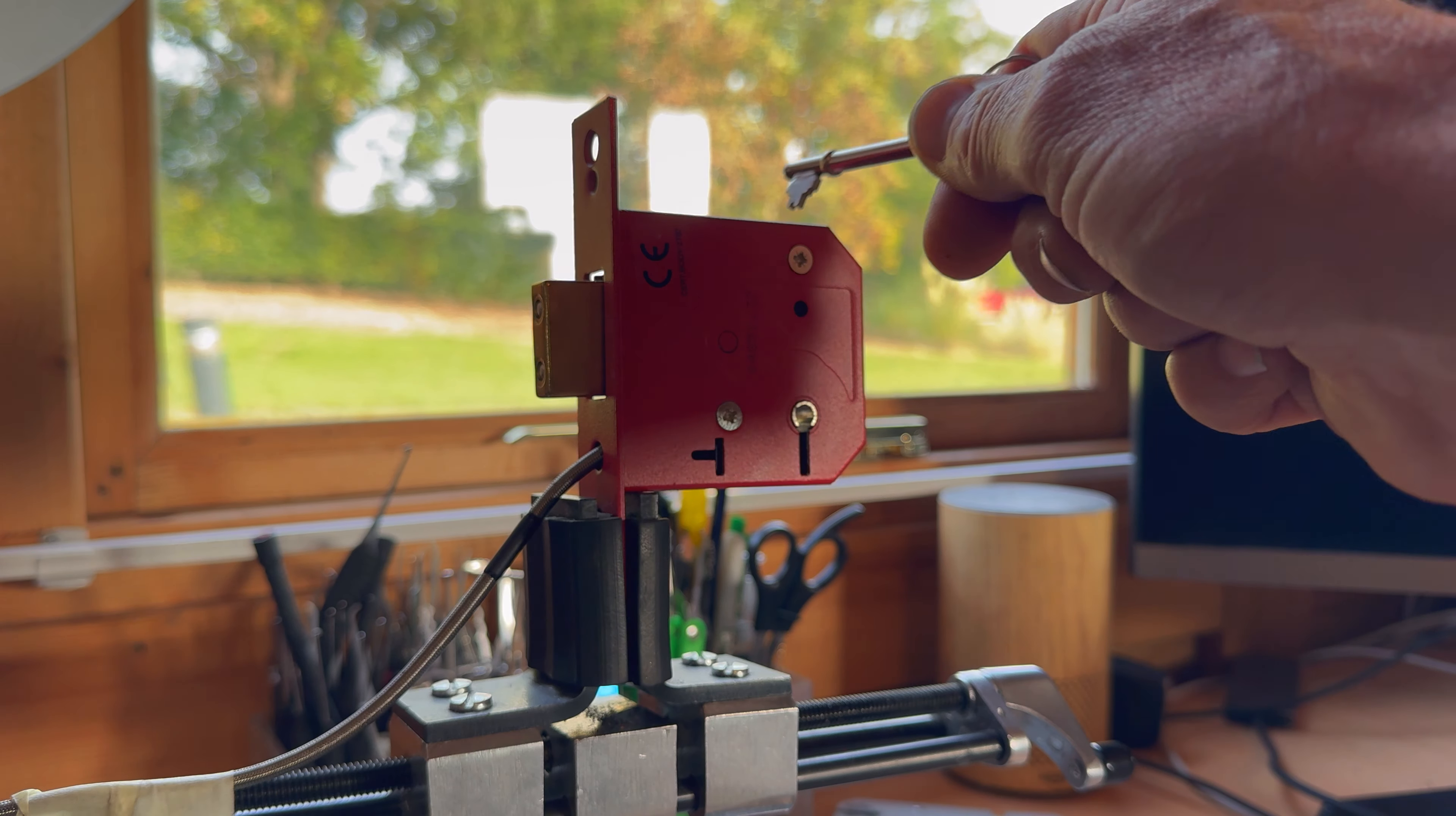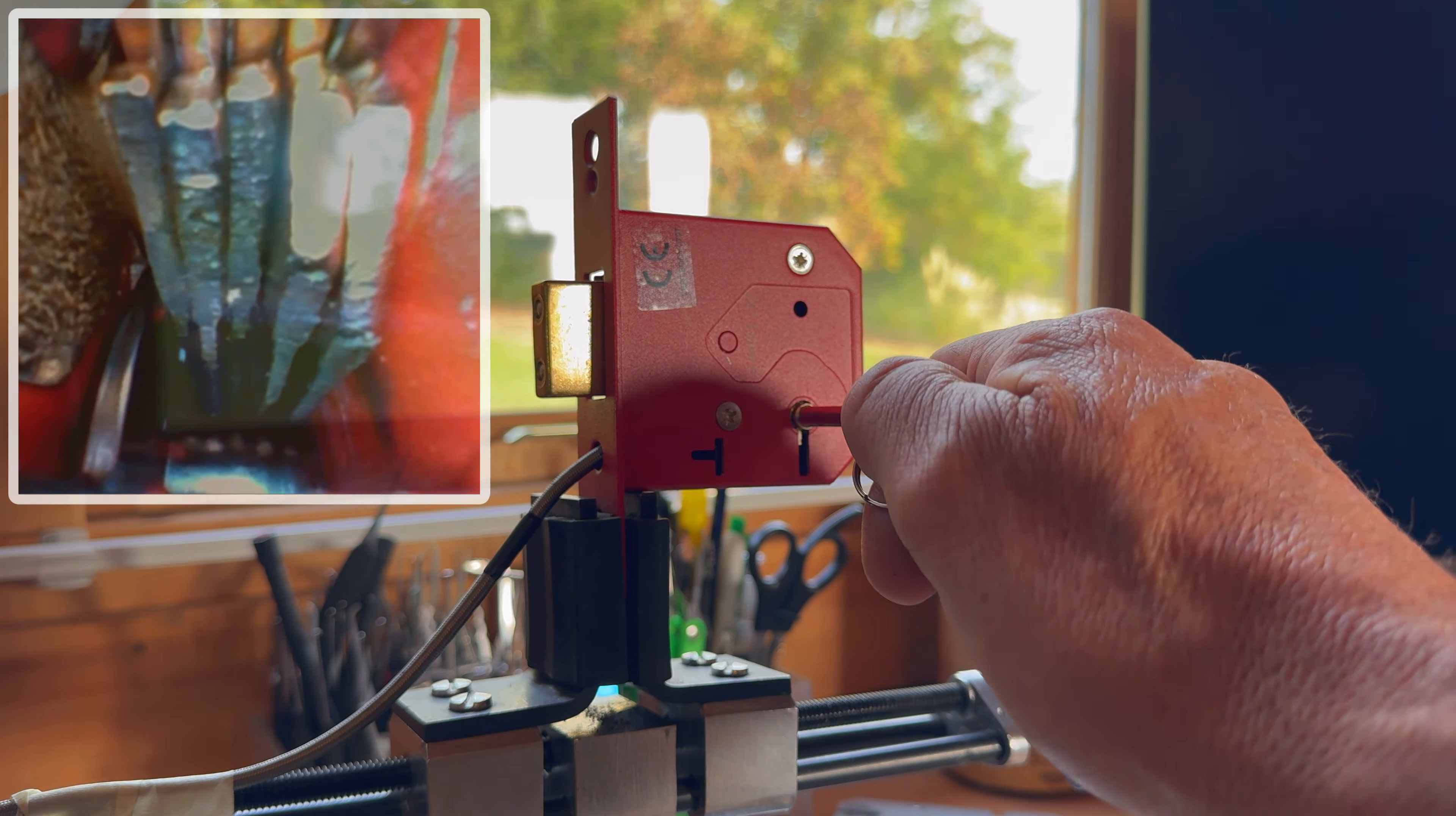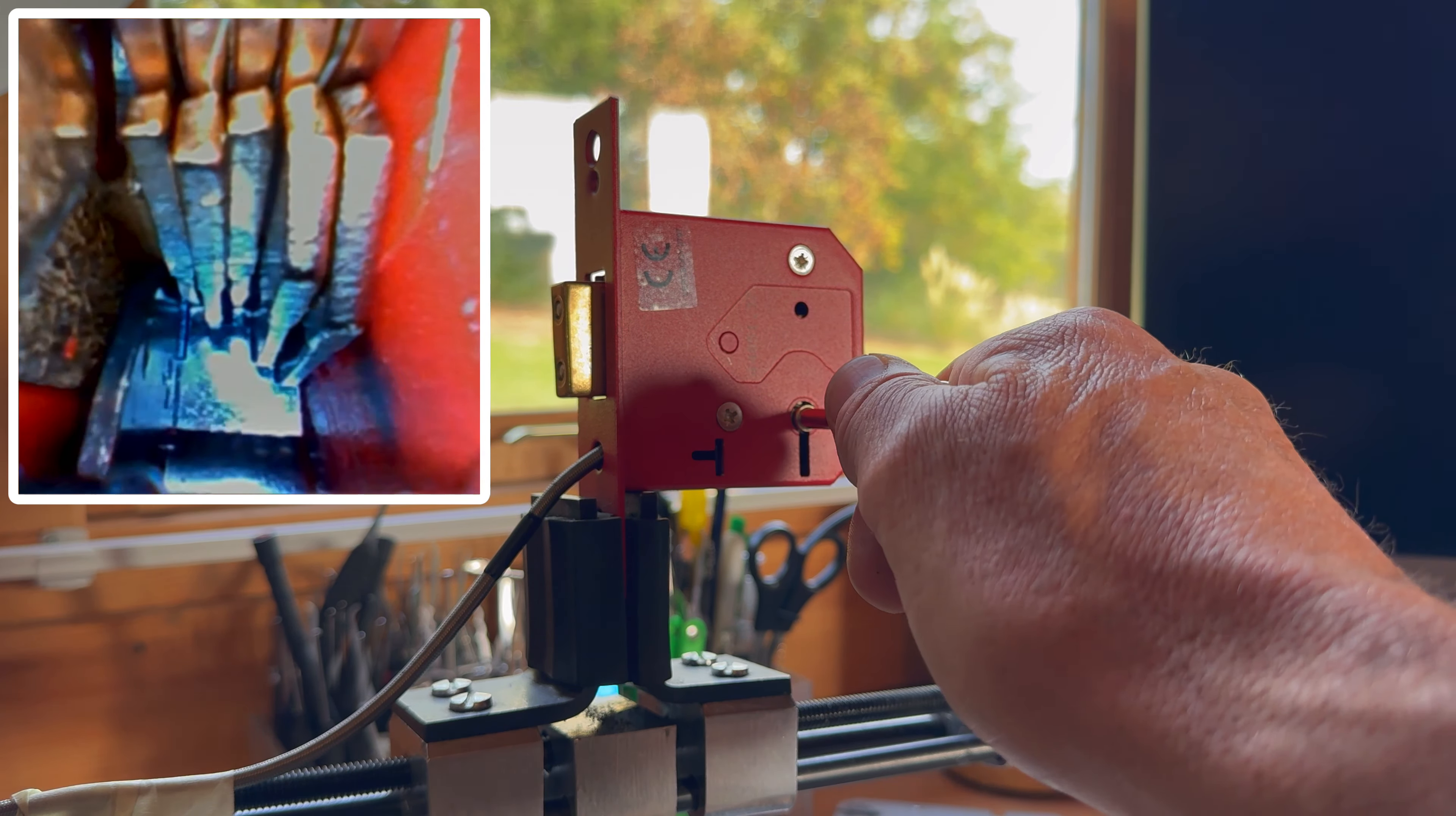This is the Union 2101 5-lever mortise lock. It's not a British standard lock, there's no hardened plate on here, but it has five levers. If you look at the key, you can see the key profile there.